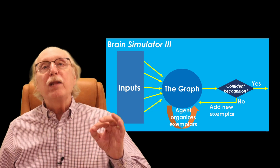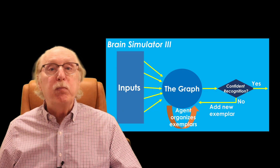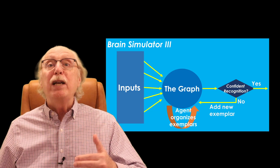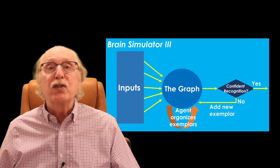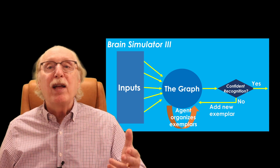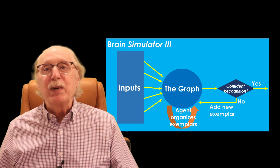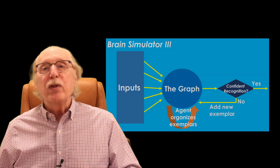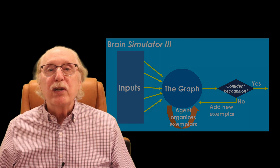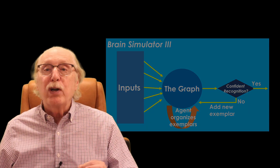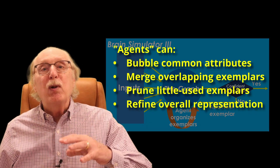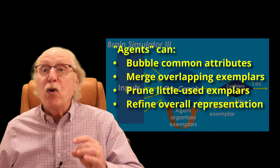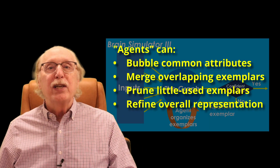Importantly, the system doesn't bloat endlessly. The brain employs internal processes that act like housekeeping staff for the graph structure. They look for common attributes which they can bubble up, and can merge overlapping exemplars.